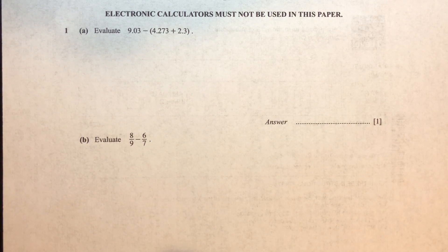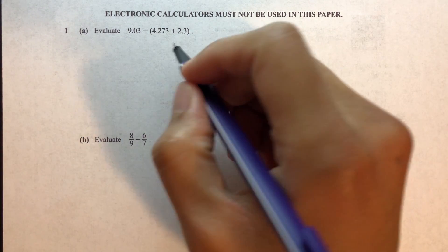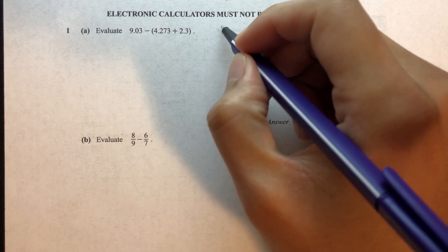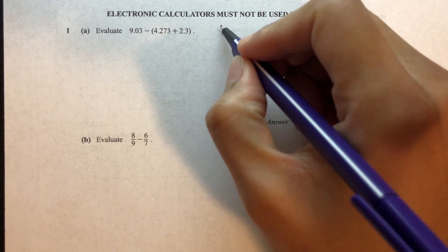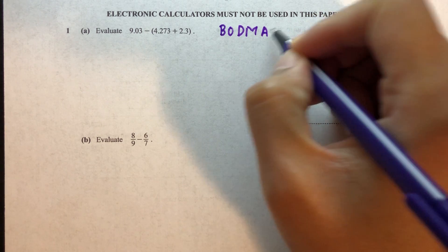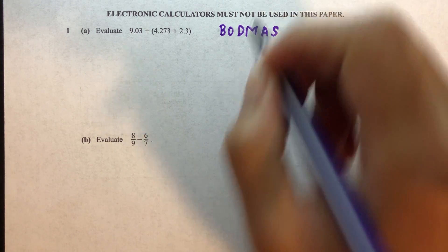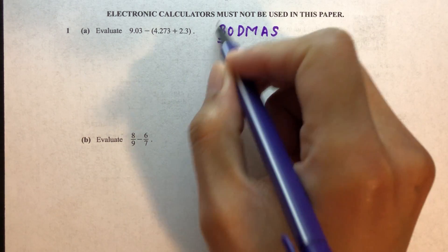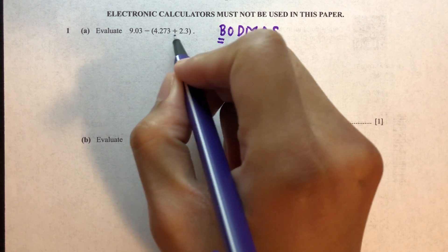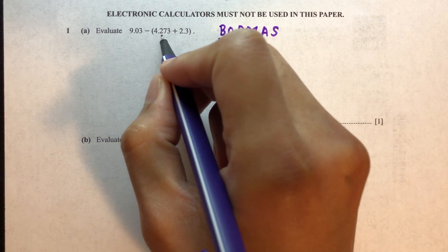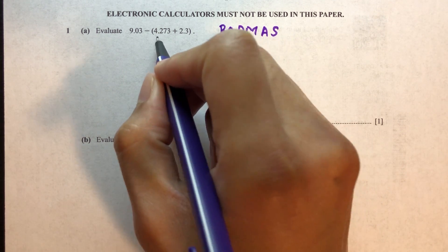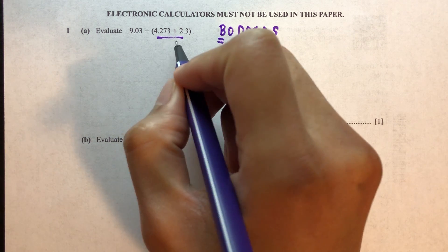Question number one, part a — this is an operations question, so we have to follow the rule of BODMAS. We have to do everything inside the bracket first, so let's do the summation: 4.273 plus 2.3.